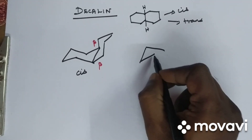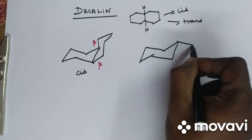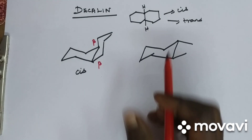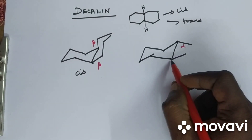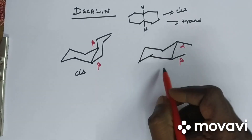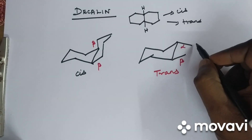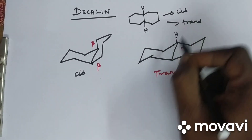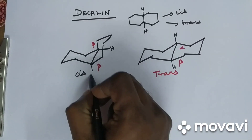Now draw the next structure for trans decalin. Look at this methylene group — it is down, meaning alpha. This other methylene group is above — meaning beta. Alpha-beta means it is trans — no doubt. Draw the remaining ring and add the hydrogens at the ring junction.